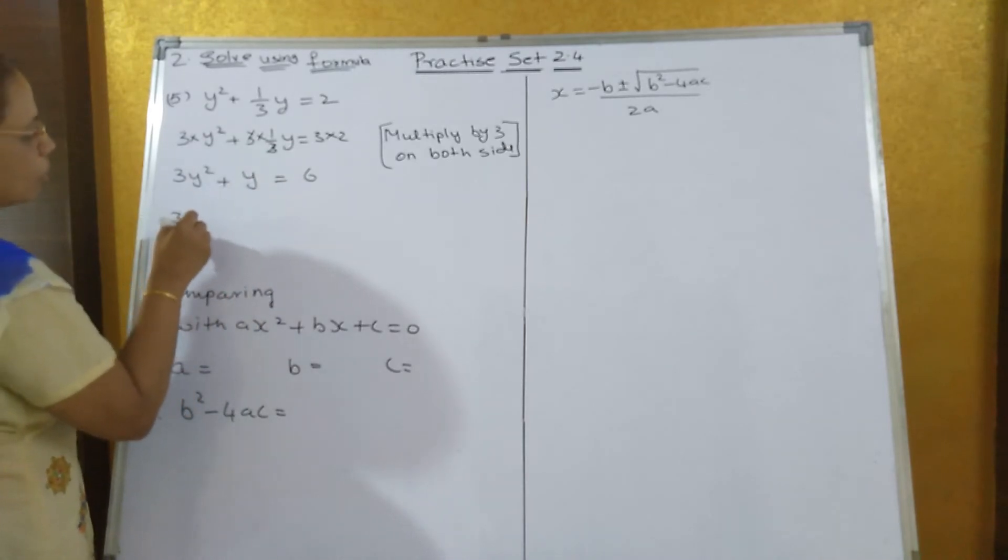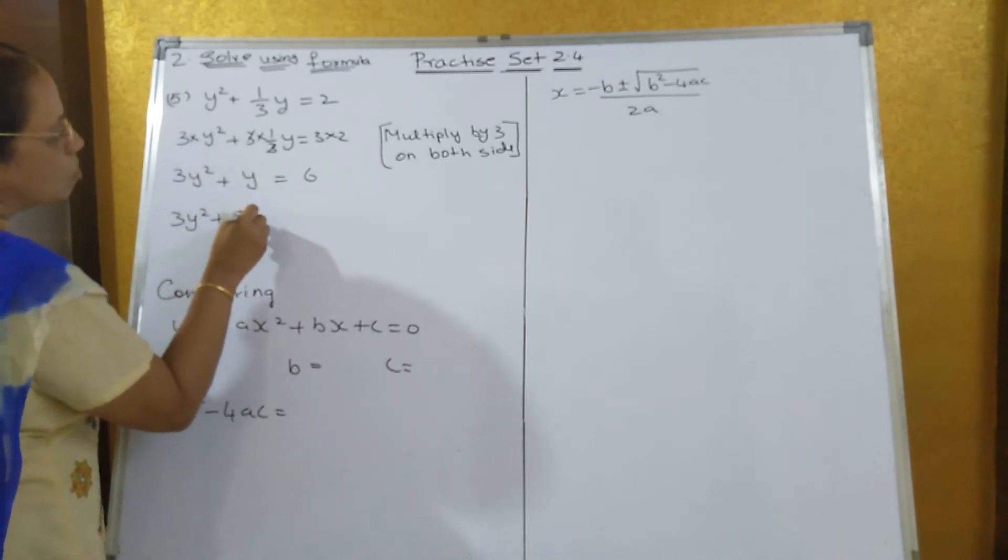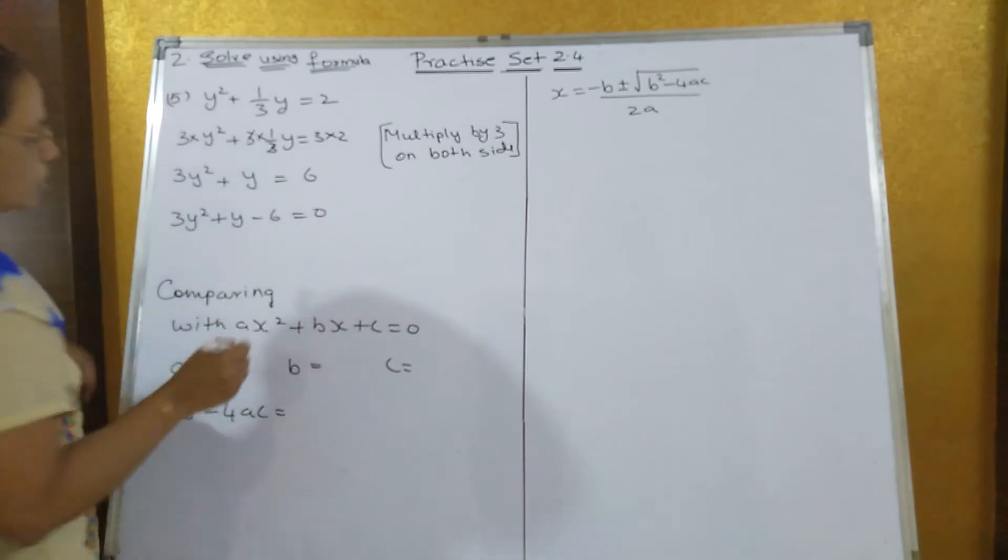Now bring this 6 on this side. What you will get? 3y² + y - 6 = 0.